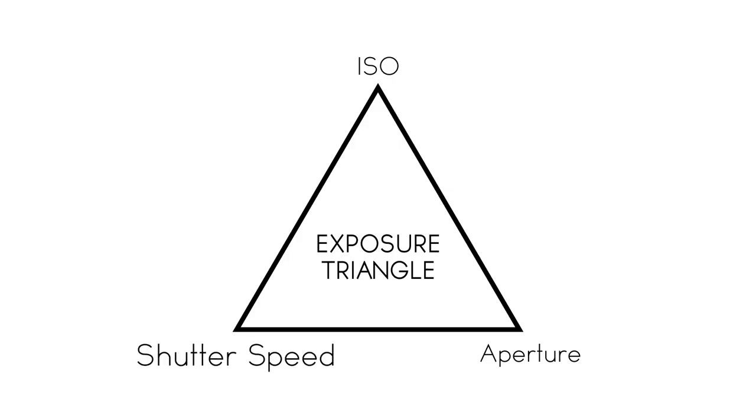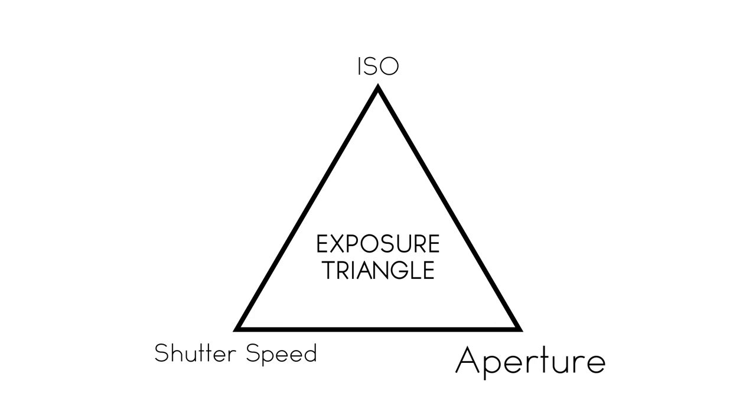We covered shutter speed, we covered aperture, now we're gonna cover the last piece of the puzzle and that is ISO. Now shutter speed and aperture have everything to do with light — how much light is hitting the back of the sensor. Well ISO doesn't have anything to do with the amount of light getting back there. ISO actually refers to the sensor itself. ISO controls the sensitivity of that sensor and how responsive the sensor is to light. The lower the ISO number, the less responsive that sensor is; the higher the ISO number, the more responsive the sensor is.